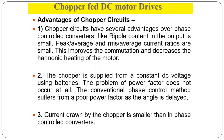The second advantage is that the chopper is supplied from a constant DC voltage using a battery, so the problem of power factor does not arise because there is no power factor interference in DC. The conventional phase-control method suffers from a poor power factor as the firing angle is delayed. Third, the current drawn by the chopper is much smaller than in a phase-control converter.